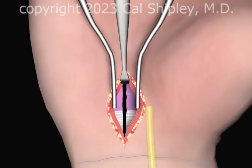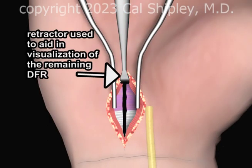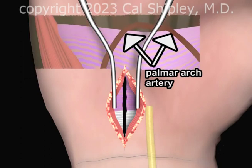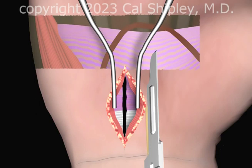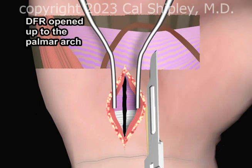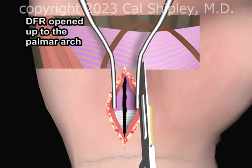A retractor is used to visualize the remaining portion of the DFR. The DFR extends distally to the superficial palmar arch artery. A scalpel is used to open the DFR up to the palmar arch.